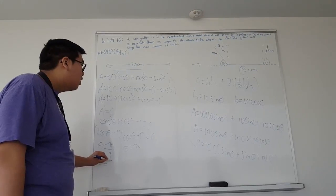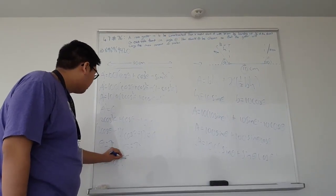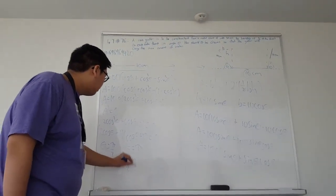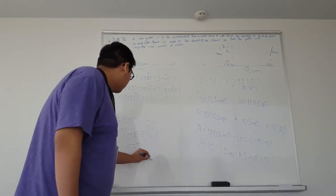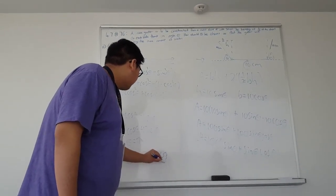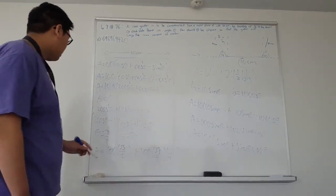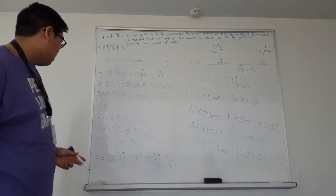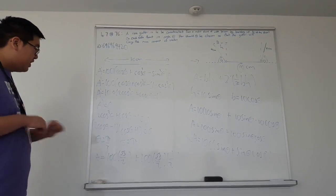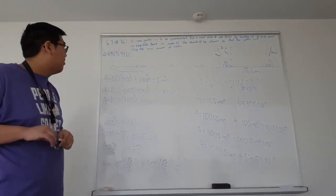And then we sub in that. We get 100 times root 3 over 2 plus 100 root 3 over 2 times 1 over 2. And you can simplify this answer if you want, but basically that's how you solve this question.